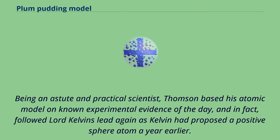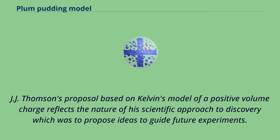Being an astute and practical scientist, Thomson based his atomic model on known experimental evidence of the day, and followed Lord Kelvin's lead again, as Kelvin had proposed a positive sphere atom a year earlier. J.J. Thomson's proposal, based on Kelvin's model of a positive volume charge, reflects his scientific approach to discovery, which was to propose ideas to guide future experiments.